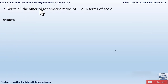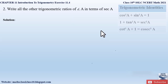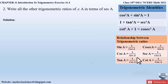Question number 2 from exercise 11.4 says: write all the other trigonometric ratios of angle A in terms of secant A. So other than secant A, we have to consider all the other trigonometric ratios — that is sine, cos, tan, cot, and cosecant — and write them in terms of secant A. This question is very similar to question number 1, and again we are going to use our trigonometric identities and the relationships between trigonometric ratios to solve this problem.